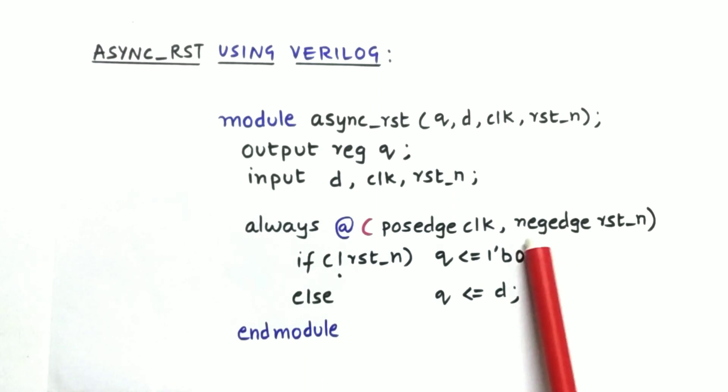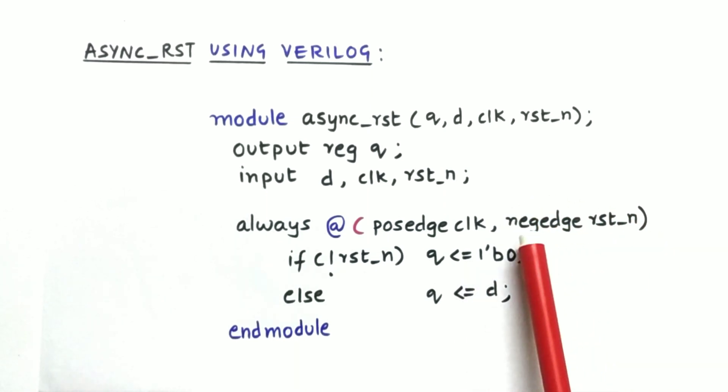So this plays an important role. Whenever the negative edge of reset is detected, this block will be triggered. So now let us simulate this code and see the waveforms.